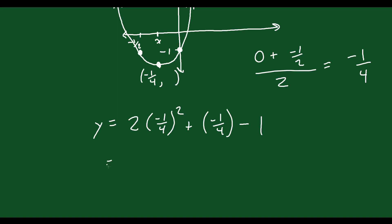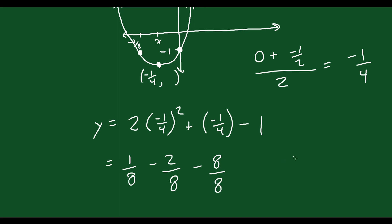Solve this. Negative 1 over 4 squared is 1 over 16. 2 over 16, that's going to be 1 over 8. You want a common denominator, so minus 1 quarter, you can make that into minus 2 over 8. And then minus 1, you can make minus 8 over 8. Add these all together, you're going to get negative 9 over 8. So that's the y value at that vertex.